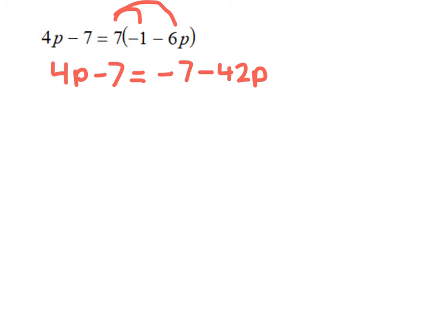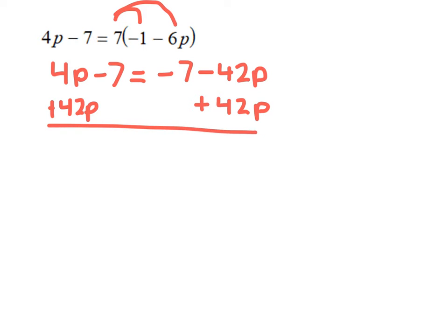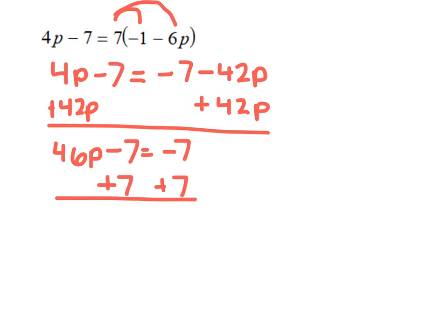Now that the right side is simplified, I'll bring all variable terms to the same side. I add 42p to both sides, giving 4p plus 42p, which is 46p, minus 7 equals negative 7 — the negative 42p and 42p cancel. Next, I bring the constants to the same side by adding 7 to both sides, giving 46p equals 0.